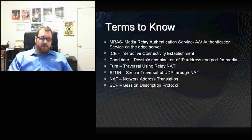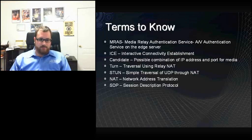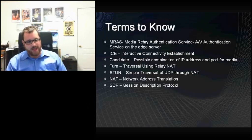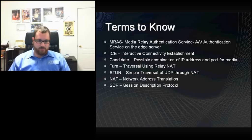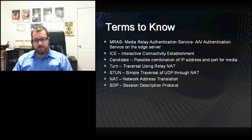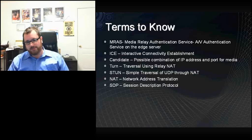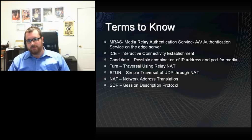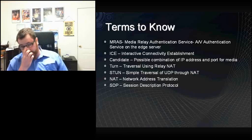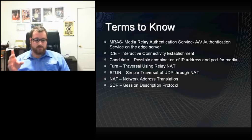Some terms to know for what I'm going to talk about: MRAS, ICE, Candidate, TURN, STUN, NAT, and SDP. MRAS and ICE are probably the most important. MRAS is a service that runs on the internal interface of the Edge server — the AV authentication service, media relay authentication service. ICE is the Interactive Connectivity Establishment Protocol, which is key to all communications in link, either internal or external, to establish media.